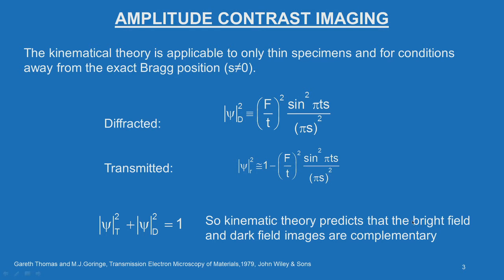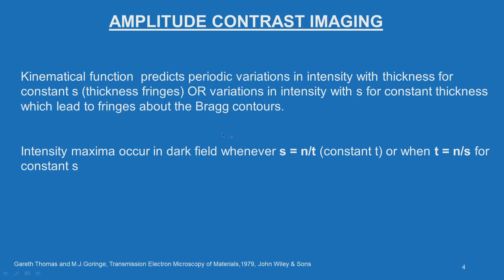The kinematic theory predicts that bright field and dark field images are complementary, because it assumes only one diffracted beam and one transmitted beam — that is a two-beam condition. This equation also predicts periodic variations in intensity with thickness for a constant S (thickness fringes), or variation in intensity with S for a constant thickness, which leads to fringes about the Bragg contours.